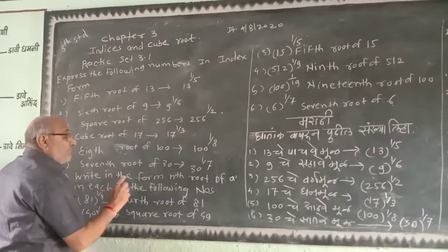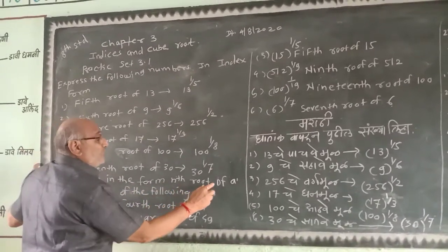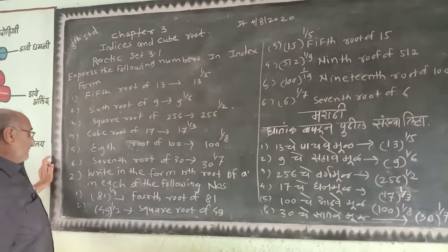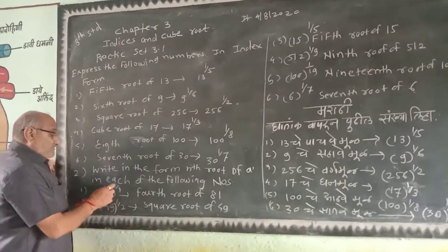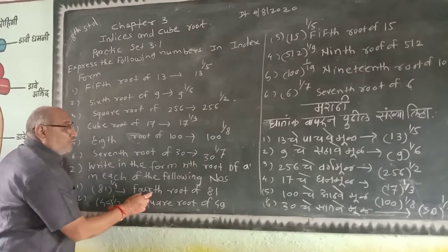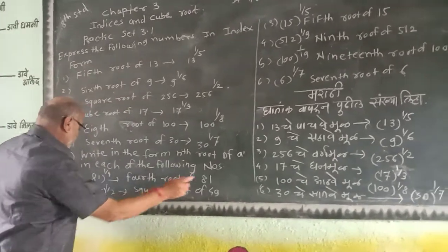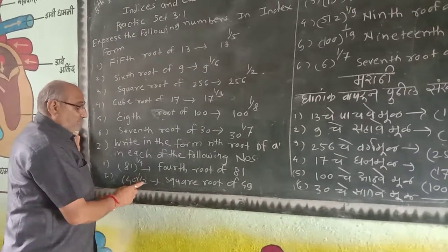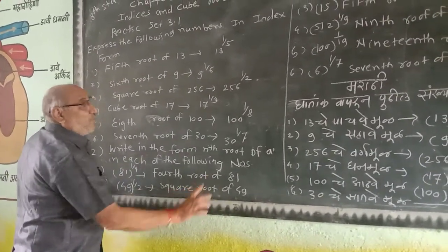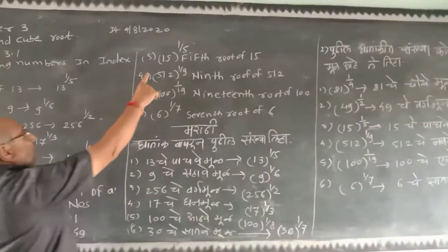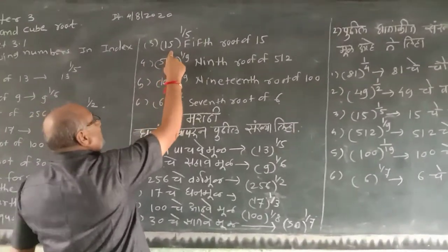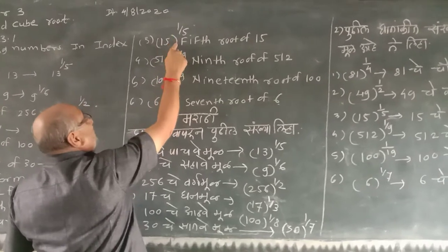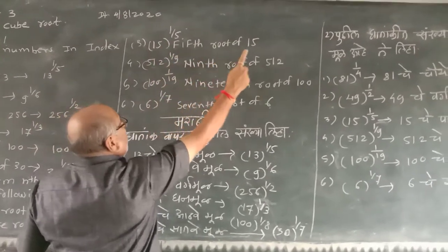Write the following as nth roots in each of the following numbers. 8.1 raised to 1/4, fourth roots of 81. 4.9 raised to 1/2, square roots of 4.9. 1.5 raised to 1/5, fifth roots of 1.5.